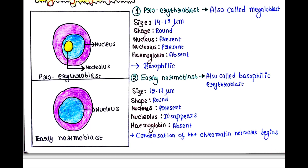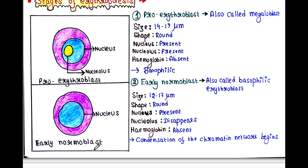Next is the early normoblast, also called basophilic erythroblast. The size of this cell is 12 to 17 micrometers — a little bit smaller than the proerythroblast. Shape: round. Nucleus: present. Nucleolus: disappears. Hemoglobin: absent. Condensation of the chromatin network begins in this cell.